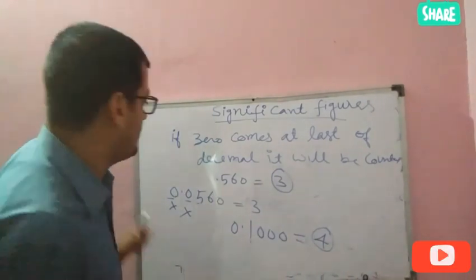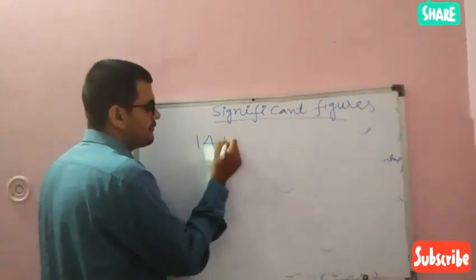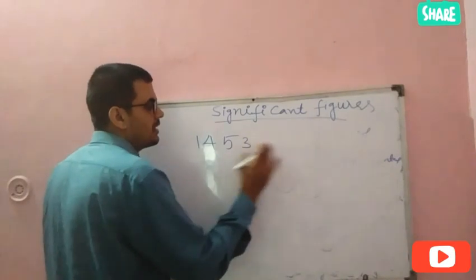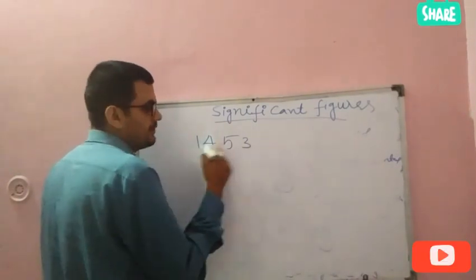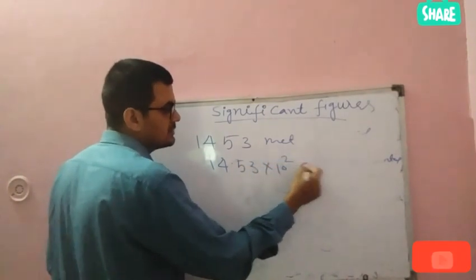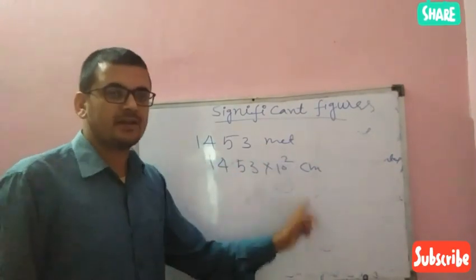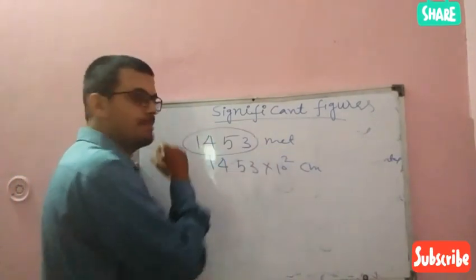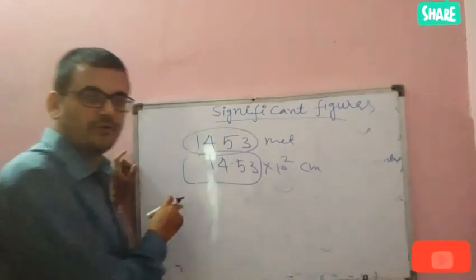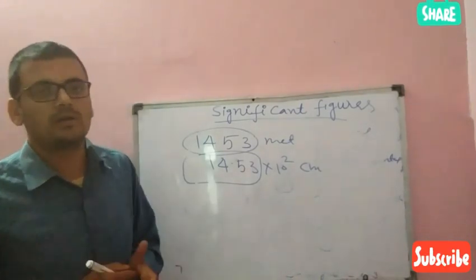One more important thing to remember: if I write 1453 meters and another student writes the same value as 145300 centimeters, both quantities are the same. The significant figure in both cases will be 4 — significant figures do not change when you change the units.